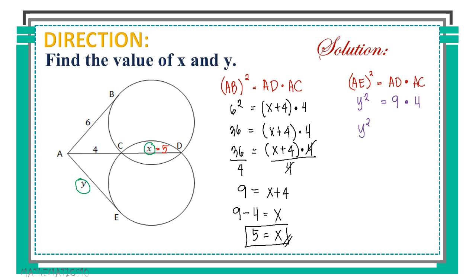And now, let's multiply. Y squared equals 9 times 4, we would have 36. This is not yet the final value for Y since we have exponent 2. Let's simplify it further by getting square root of both sides. What is square root of Y squared? It's Y. And square root of 36, it's 6. Therefore, this is our final answer. X is equal to 5 and Y is equal to 6. This means the length of AE is 6. And we're done.